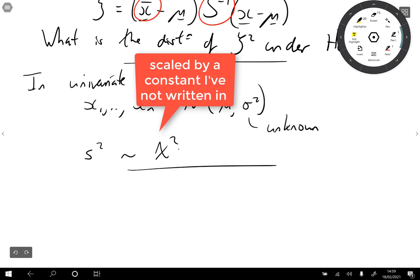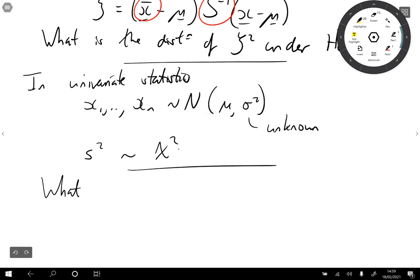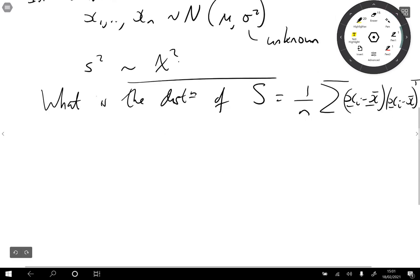So the question is, what is the distribution of S, of the sample covariance matrix S, which remember is 1 over n sum of xi minus x bar xi minus x bar transposed. So this is where the Wishart distribution comes in.